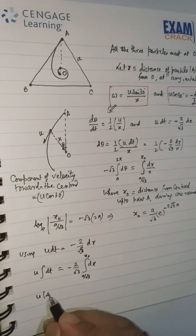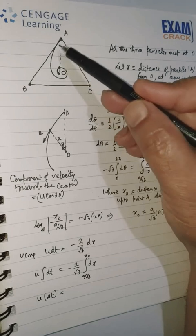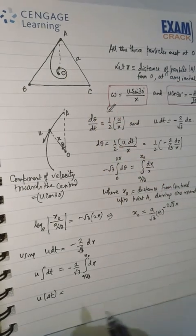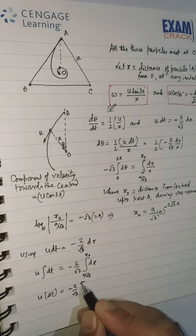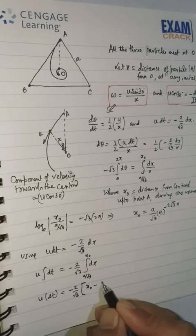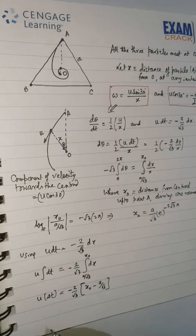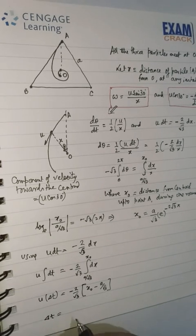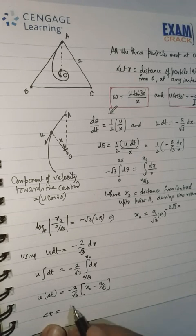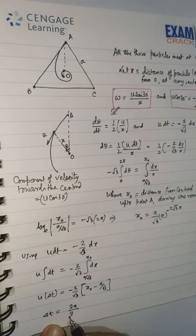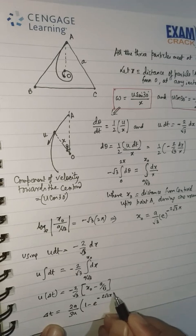So it will equal U Δt, where Δt is the time taken by the particle to move such that its rotation is 2π. So U Δt is minus 2/√3 times (x₀ minus A/√3). Check the calculations. From there, Δt comes out to be—I'm reversing this adjustment of the negative sign—it will be 2A/(3U) times (1 minus e^(-2√3π)). This is time.